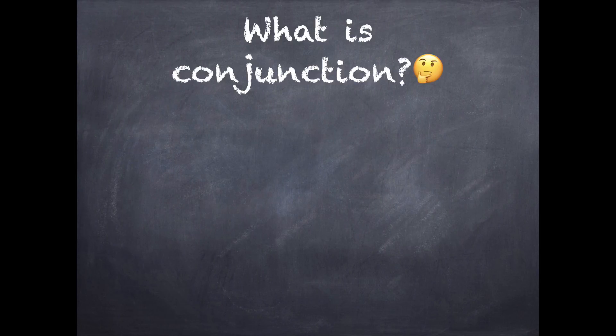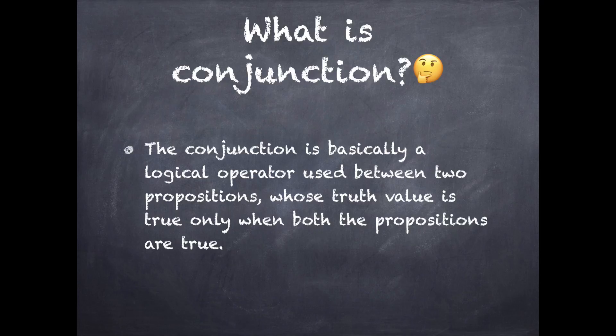So what is conjunction? The conjunction is basically a logical operator used between two propositions whose truth value is true only when both the propositions are true.